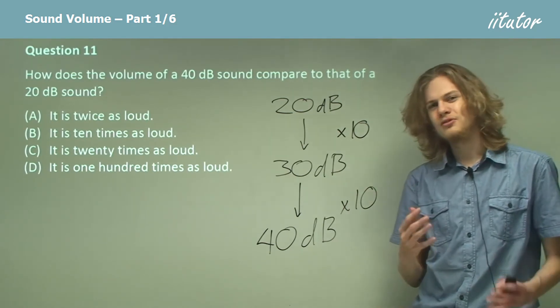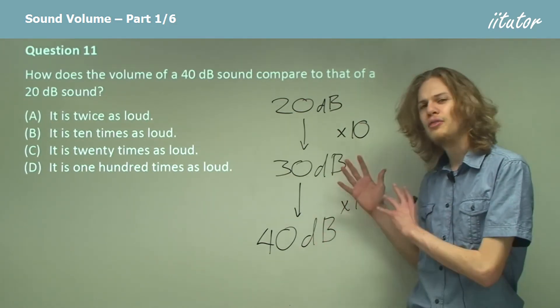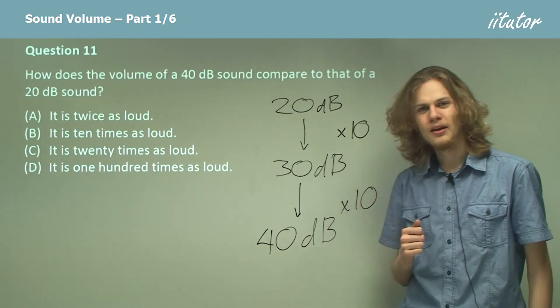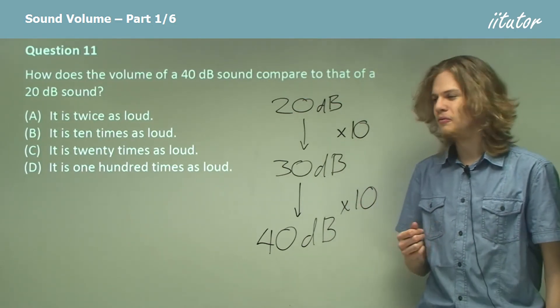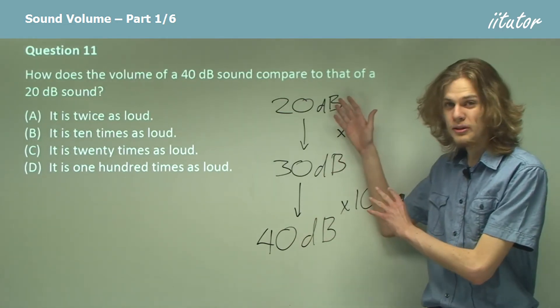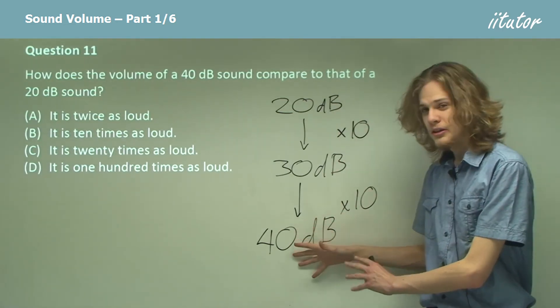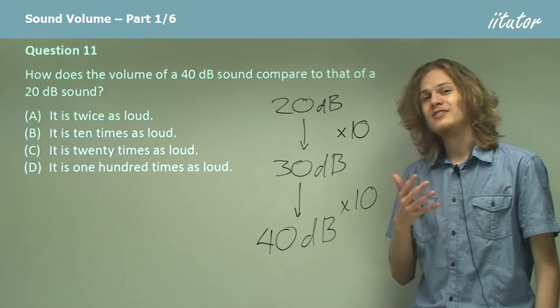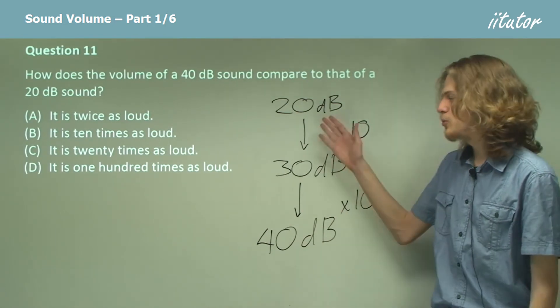So how many times louder is 40 than 20? Well, the answer should be pretty obvious. If 40 is 10 times 30 and 30 is 10 times 20, then 40 must be 10 times 10 as loud as 20.